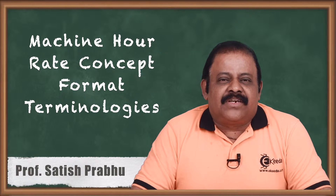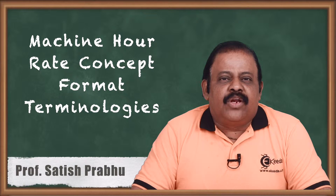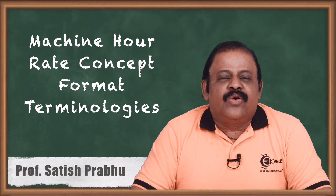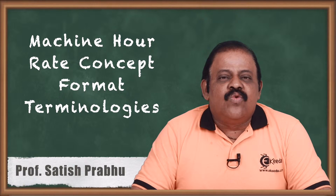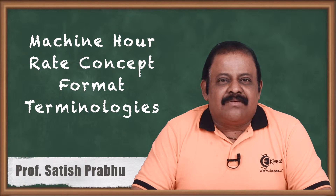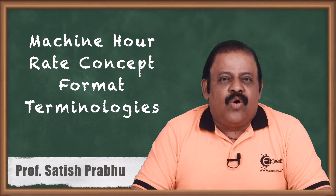These machineries are used in the production process as per the requirement, as per the length of time, or as per the details of processes. Each machine devotes a particular amount of time to produce a particular unit of product. We are going to find out machine hours taken by the machines to produce a particular product. Depending upon the machine hours taken, we allocate the production overheads to that particular product which is produced by the machine.